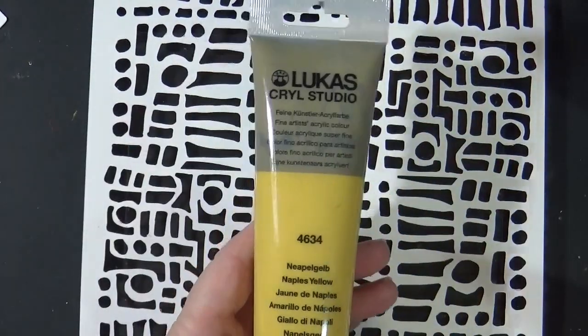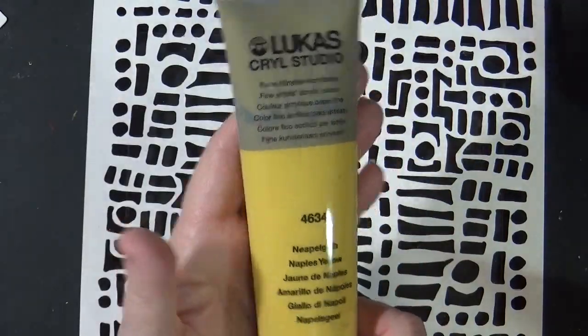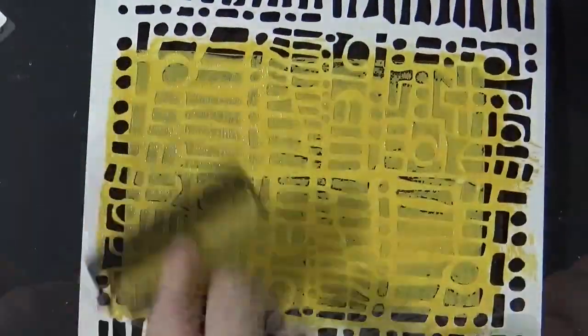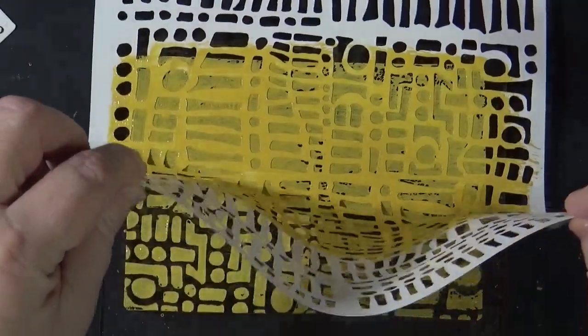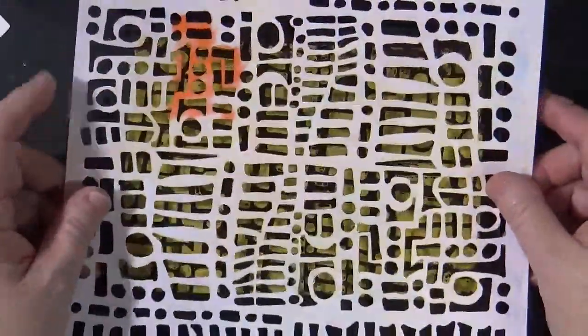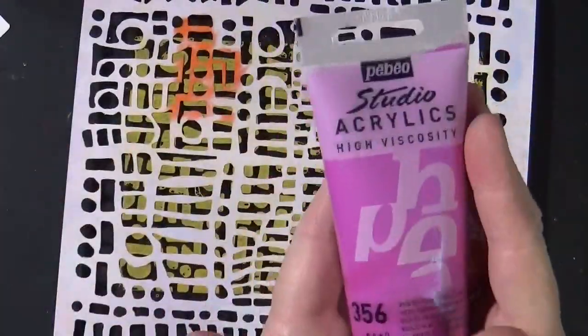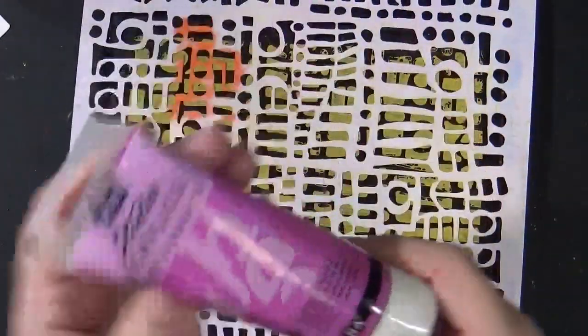So I thought we'd start with this Lucas Krill Naples Yellow. We'll pull this off. We're going to use the same section of the stencil, only we're going to flip the stencil so that we get a different pattern, just like that, and then we're going to go over it with this Pebeo Pink.